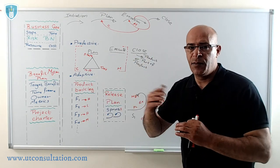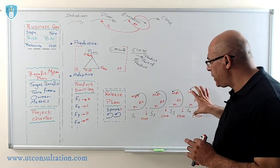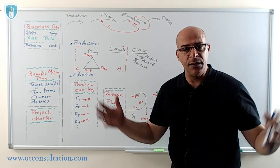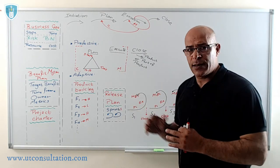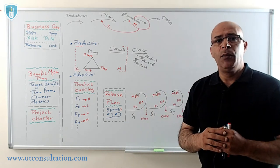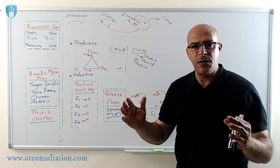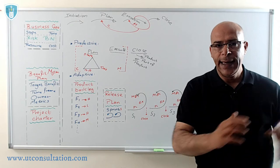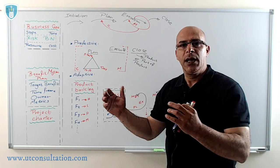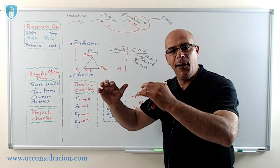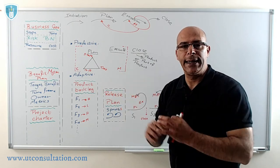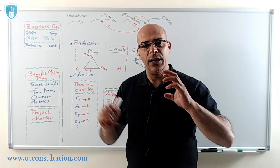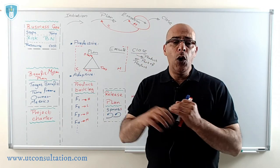Comparing with the predictive lifecycle: in predictive, closing means delivering a complete product. In adaptive, we deliver a product or part of the product or a working product. Here 'closing' means ready to go — it may include integration so it can be used. Each sprint produces a working product that can be used, but it doesn't necessarily deliver business value by itself. A complete release, however, must deliver business value. For a large product, you may have more than one release — release 1, release 2, release 3. The same way, the most important features will be in release 1, then release 2, then release 3.